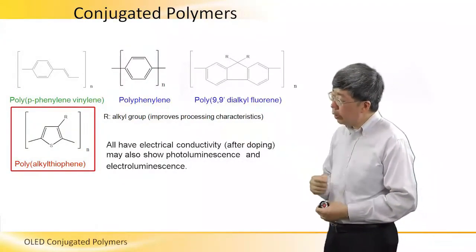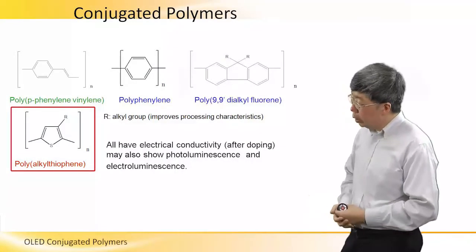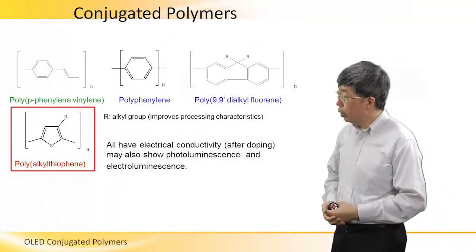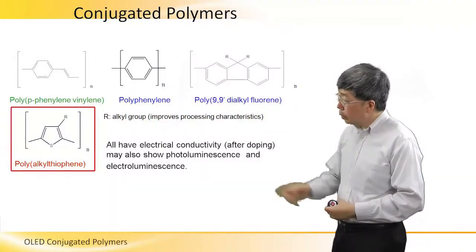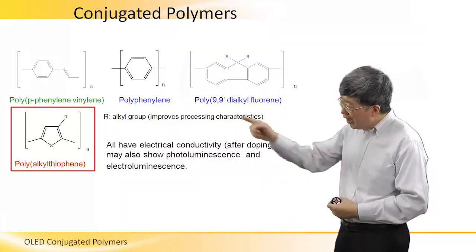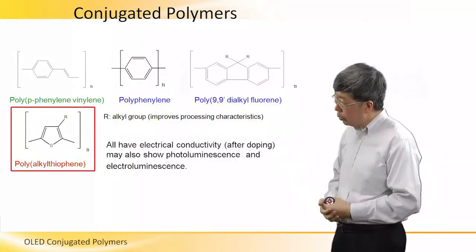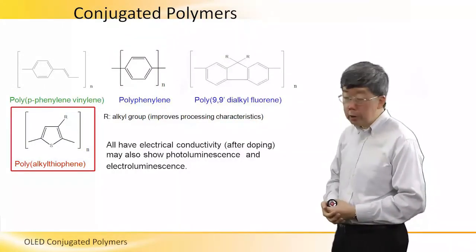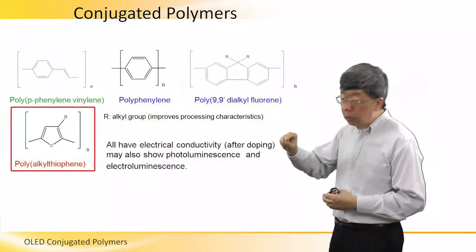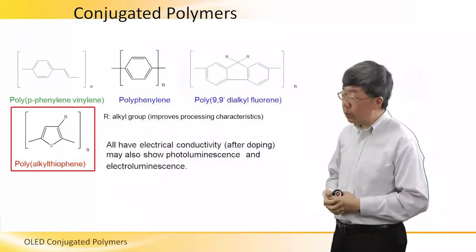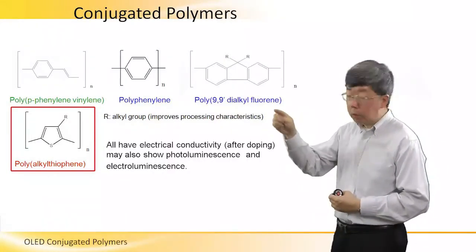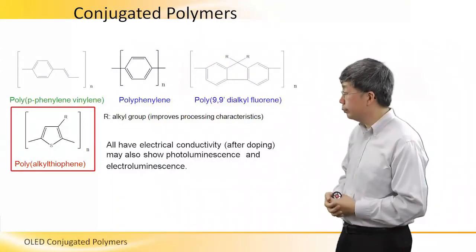There is a sulfur atom in this five-membered ring. And the R, which you see inside the structural formula, is what's called an alkyl chain — a chain of carbon atoms.